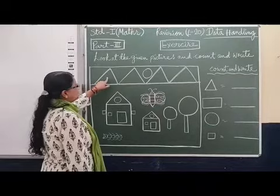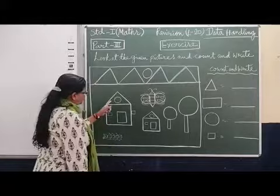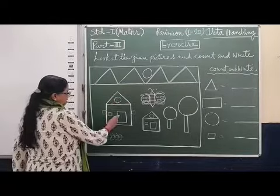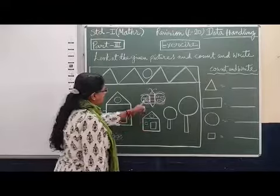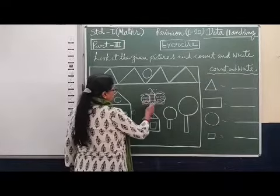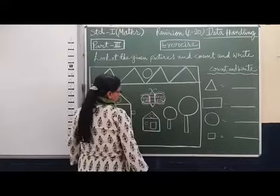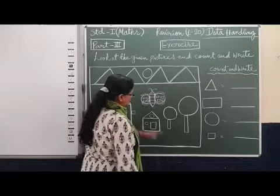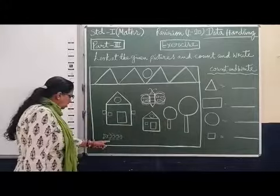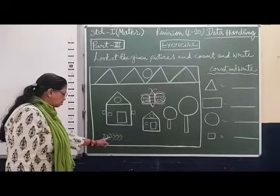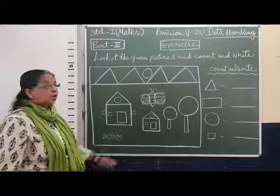Let us see — mountains are made with the help of triangles, a sun with the help of a circle, a house with the help of triangle, circle, and rectangle, a tree with the help of rectangle and circle, and an insect that is also made with circles. We have to count all these shapes and write the proper number.